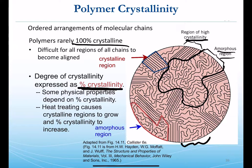Heat treating, with careful selection of temperature, can cause crystalline regions to grow and increase the percent crystallinity. But if the temperature and conditions aren't done just right, you may actually lose crystallinity. It all depends on thermal transitions and the chemical definition of the polymer.